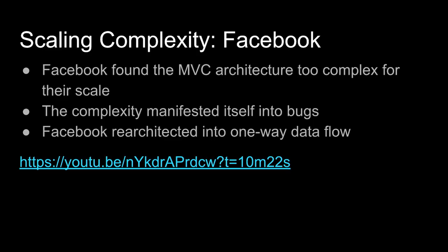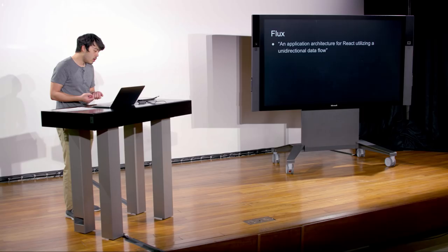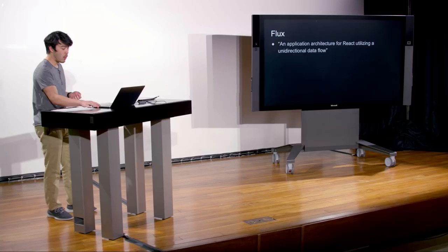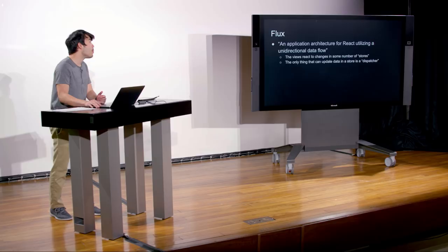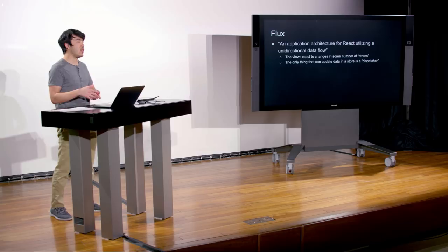What they did is re-architect everything into a single-direction data flow, where data only comes in from one direction and there's only one way to update that data. They created a new architecture called Flux — a new application architecture for React that utilizes a unidirectional data flow. In Flux, views react to changes in some number of stores, which store the data. The only thing that can update this data is something called a dispatcher.